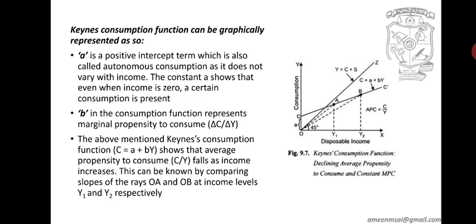The Keynes consumption function C equals A plus BY shows that average propensity to consume falls as income increases. This can be known by comparing the slopes of the rays OA and OB at income levels Y1 and Y2 respectively on the graph. The slope of the consumption curve C equals A plus BY measures MPC — the marginal propensity to consume.